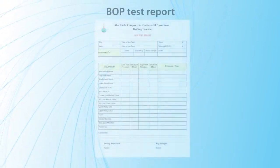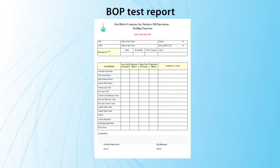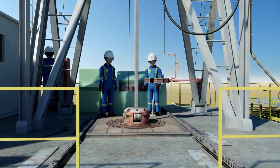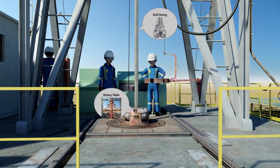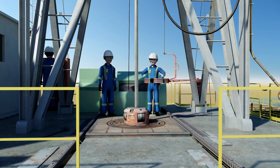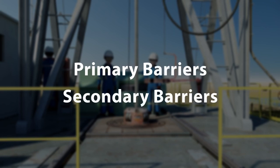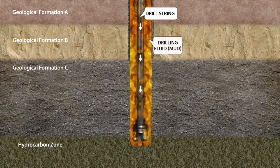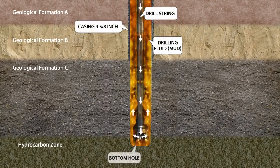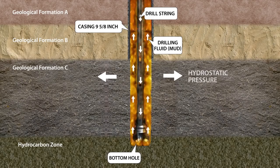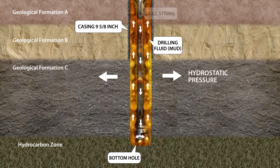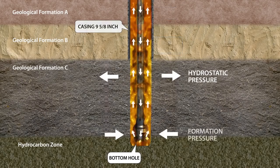Well control also covers the installation, repair, maintenance, and operation of surface well control equipment. It consists of well control barriers, which are divided into two groups: primary and secondary barriers. The primary well control barrier is the fluid column hydrostatic pressure, referred to as wellbore pressure, that provides overbalance against the formation pressure.